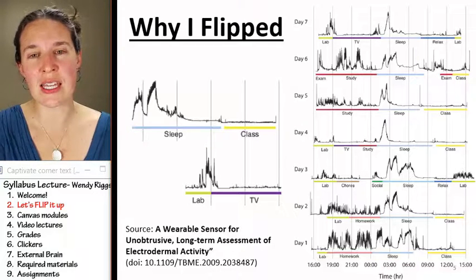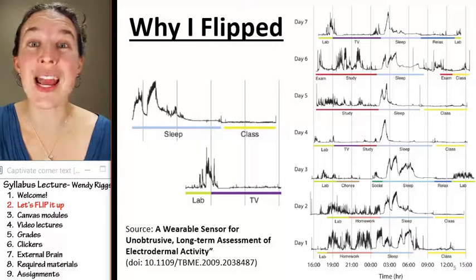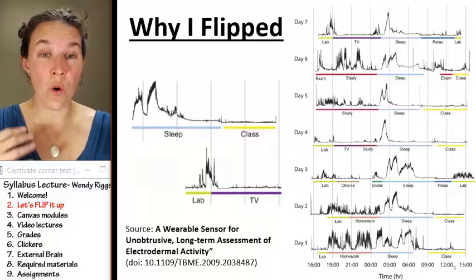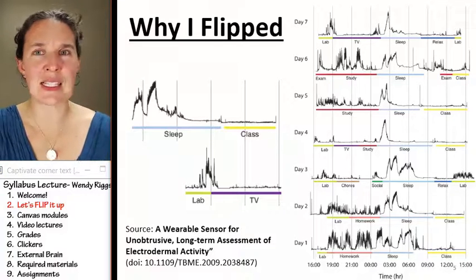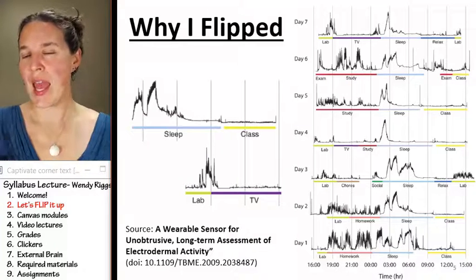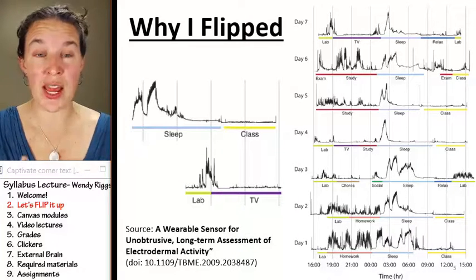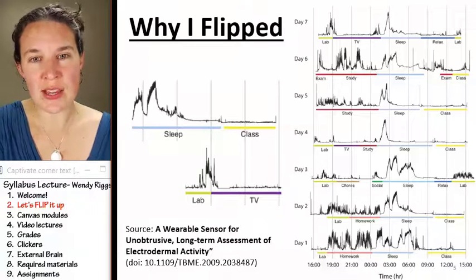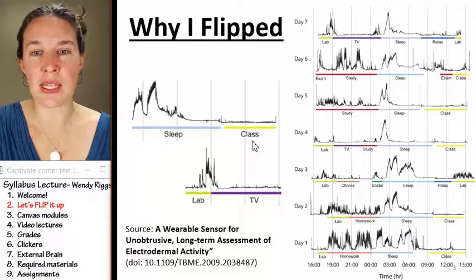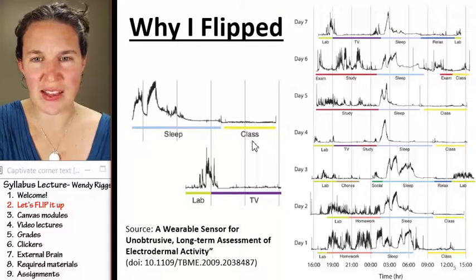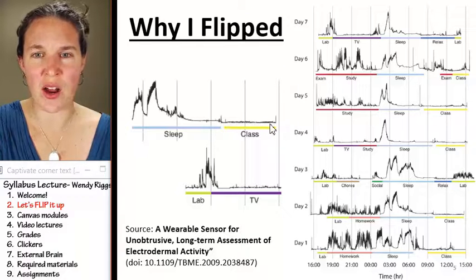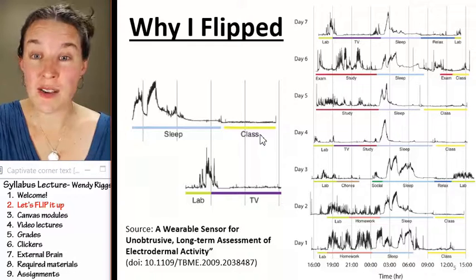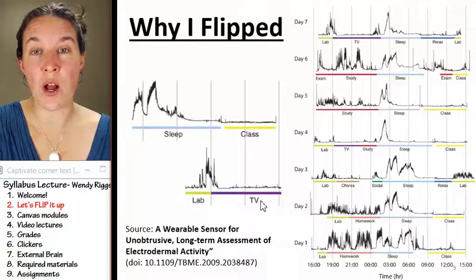This is the brain activity of a kid who wore a skin sensor for a week, and they just monitored how active his brain was in various scenarios. I've highlighted the place where he's in class, and I want you to look at the amount of brain activity going on for this young person while he's in class. Compare that to his brain activity while watching TV.